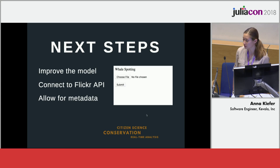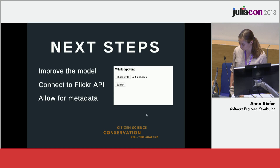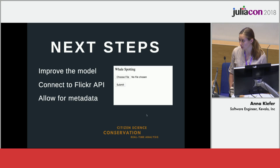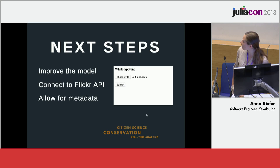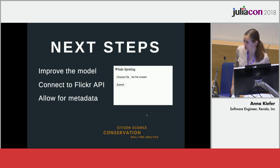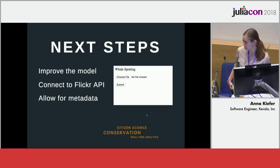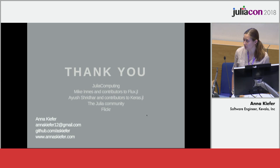Next steps for this project: I can continue improving the model. I know some other great Julia libraries like Knet and Mocha, and I could potentially try implementing my model using those. I would also like to connect to the Flickr API in real time. I'm a web application engineer by training, so I created a very simple web app — I actually tried to buy WhaleSpotting.com, but it cost about $27,000. My model also doesn't allow for any metadata like where the whale was seen or the depth of the water it was seen in, which can be critical in determining whale species. Thank you, and thank you to the Julia community.